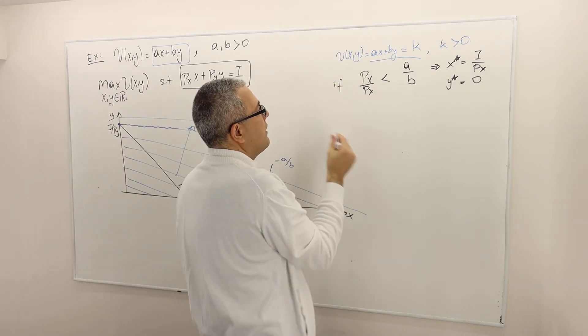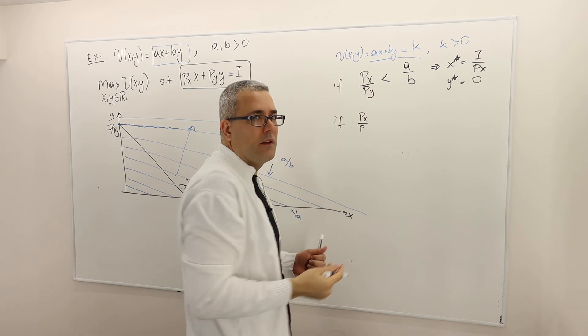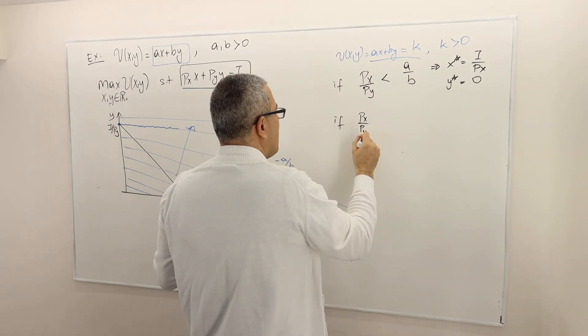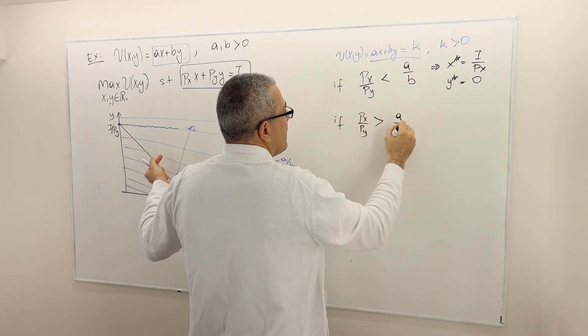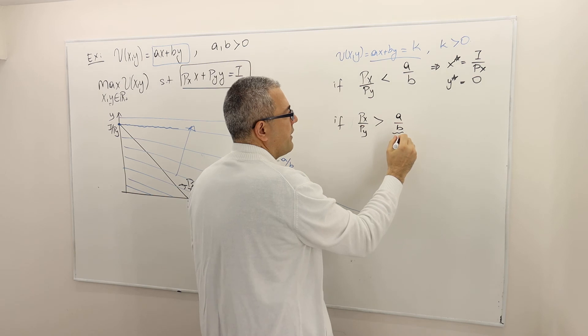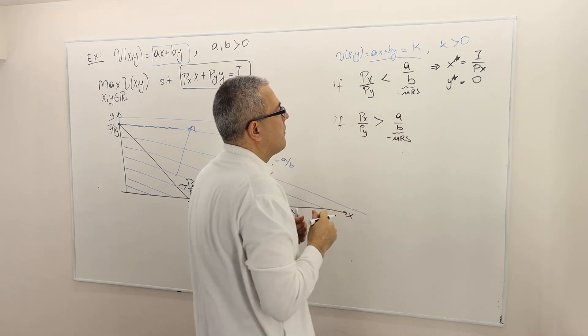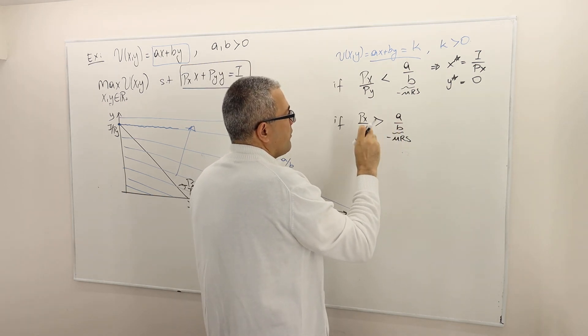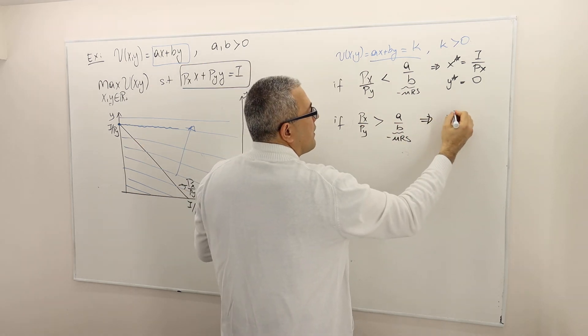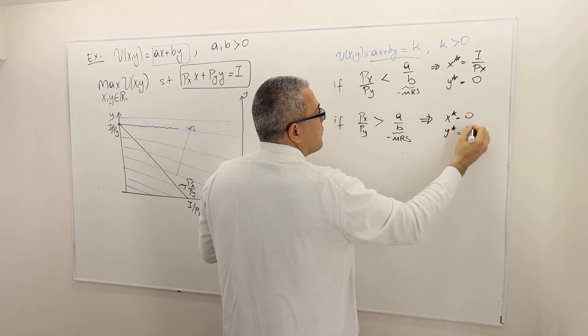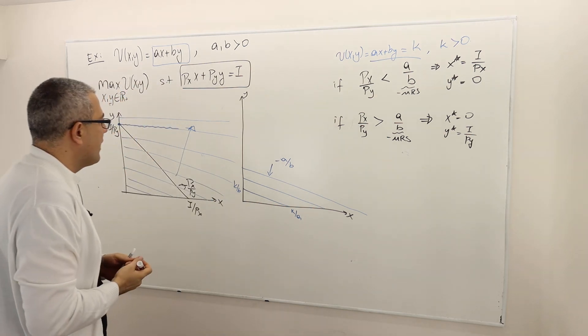This is an if-then statement. If my price ratio - this is PX over PY - if the price ratio is greater than my marginal rate of substitution, right? This is MRS, minus MRS. If the price ratio is greater than the minus MRS, then as we just visualized, X star has to be zero this time and Y star is equal to income divided by PY, which basically means I spend my entire money on good Y.